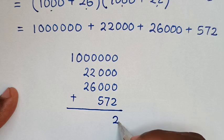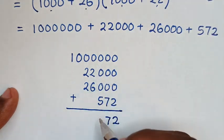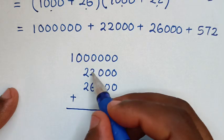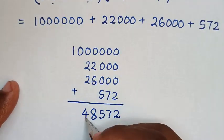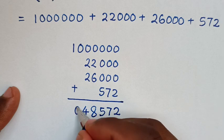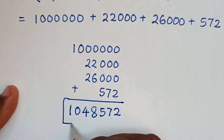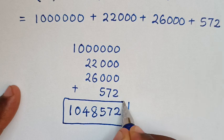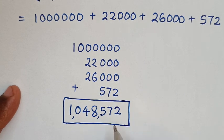So add this together, here it will be 2, here it is 5, 7, then 5. 2 plus 6 is 8, 2 plus 2 is 4, then 0, then 1. So this is our final answer, 1,048,572.